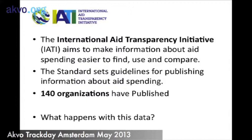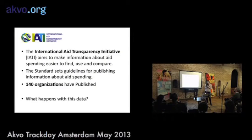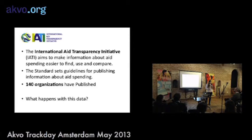At the moment about 140 organizations have published in IATI, and the amount they've published represents about 75% of official development assistance. There are still many organizations that should publish in IATI, because if everybody did, we'd have one big registry where you can search for health in Kenya and find all the organizations working there — which would be an ideal world.